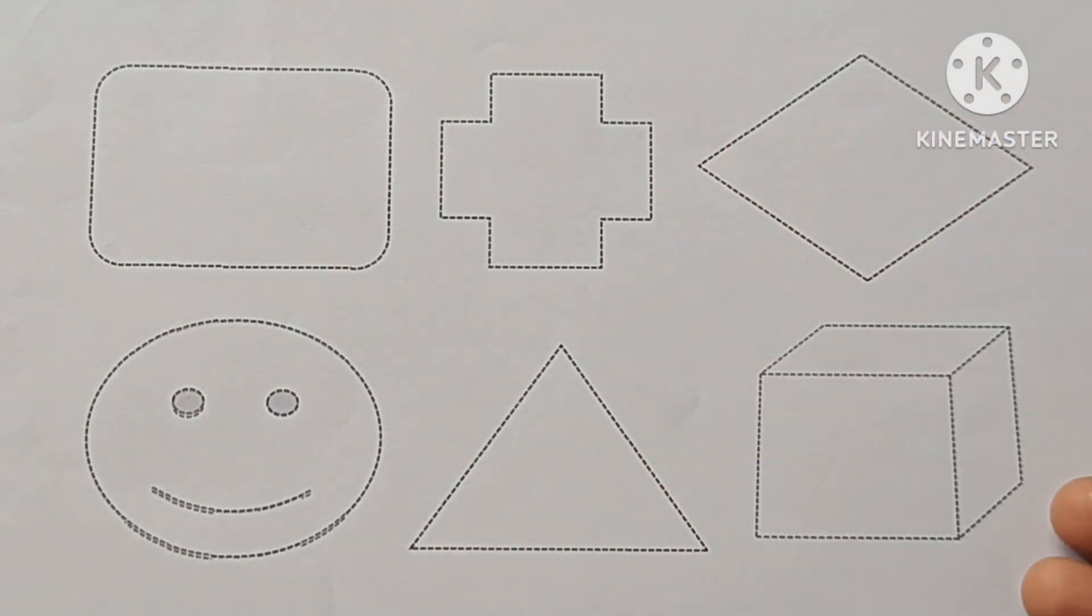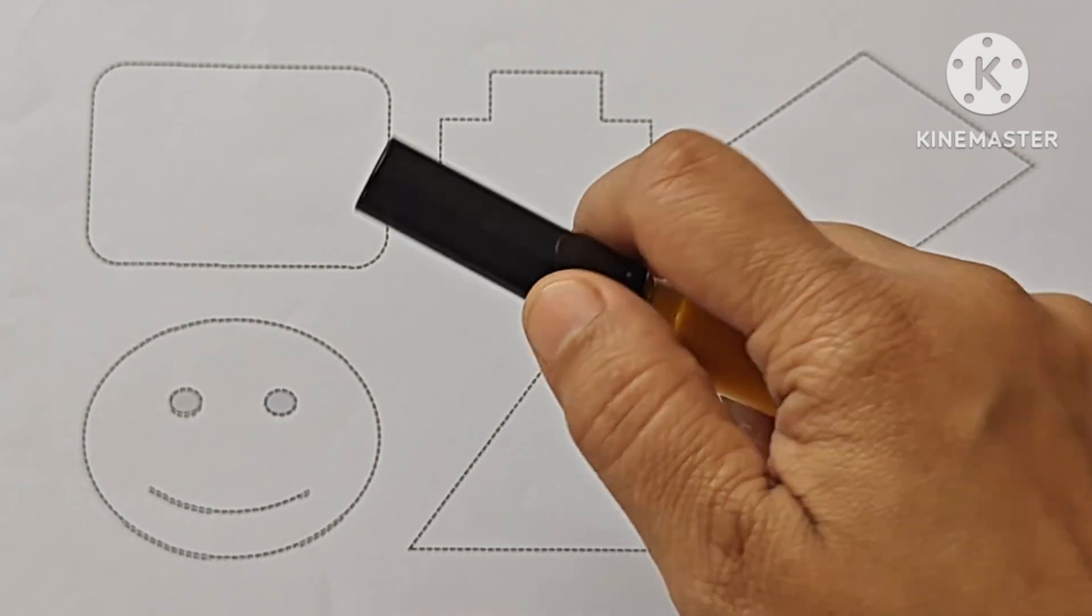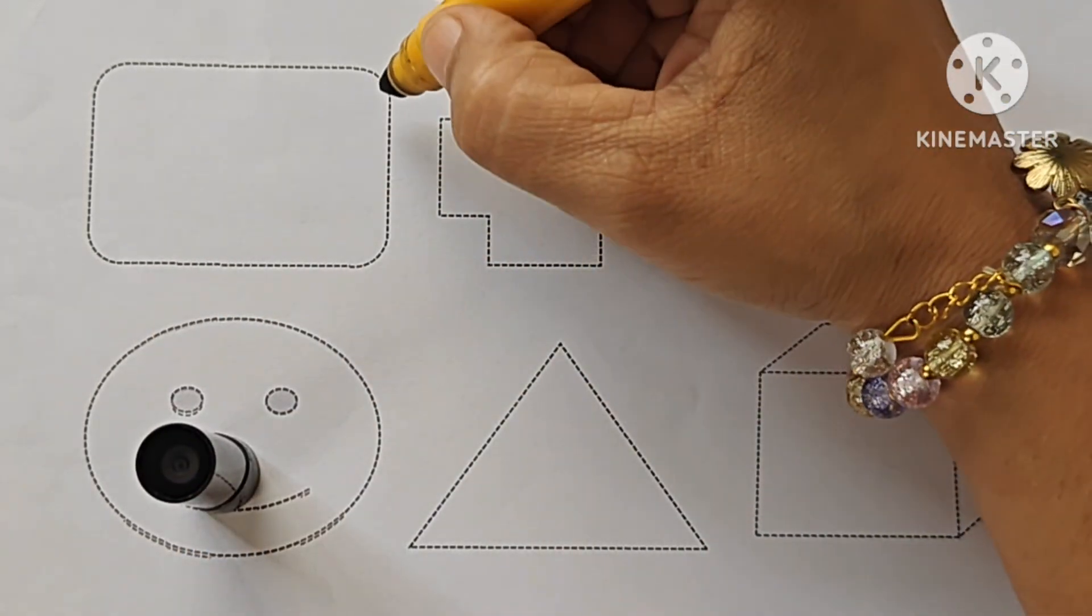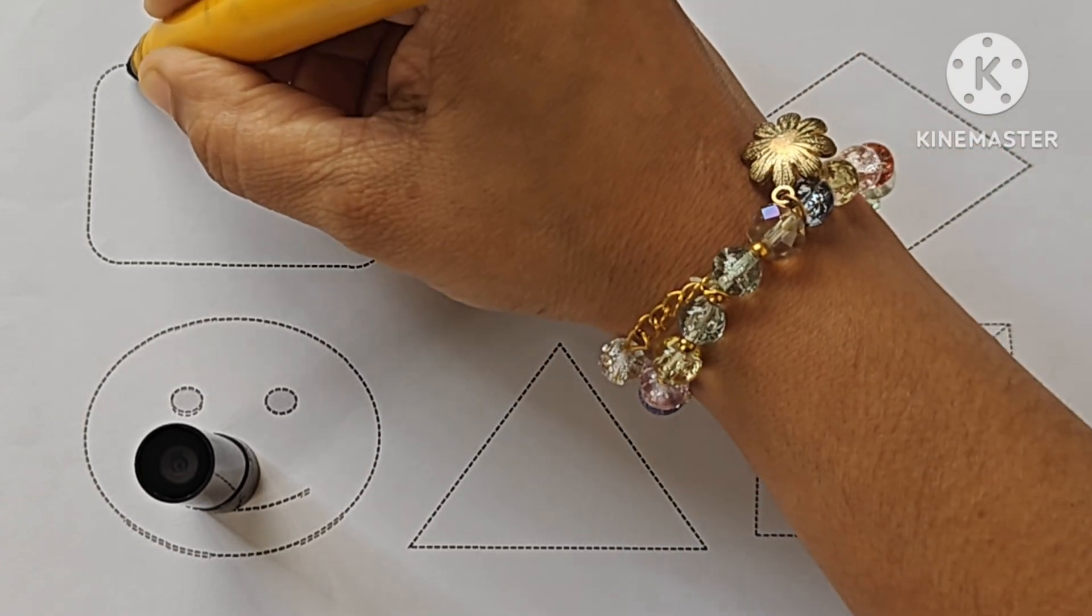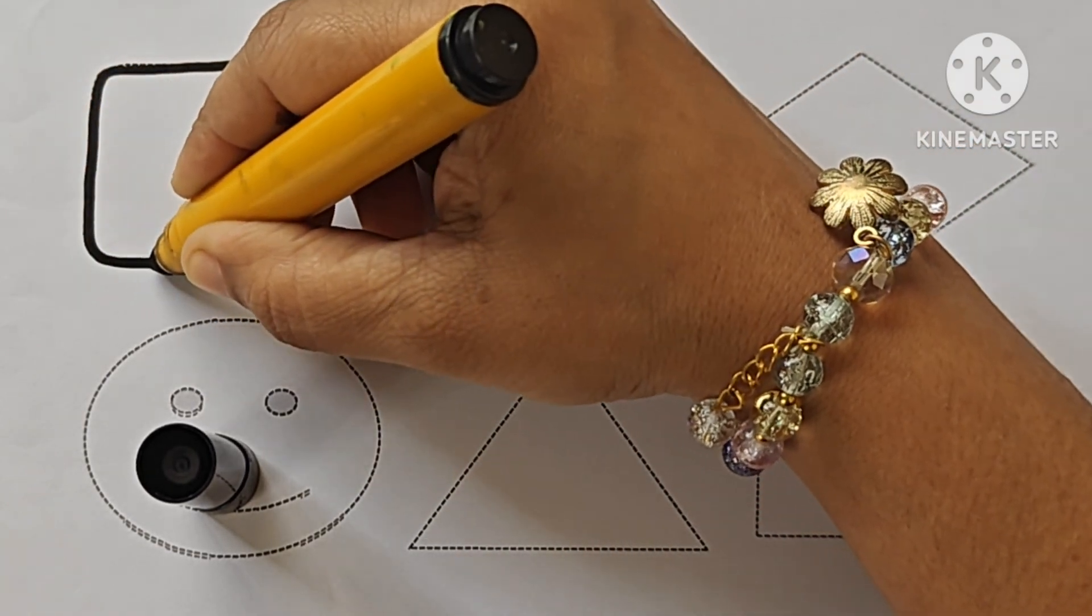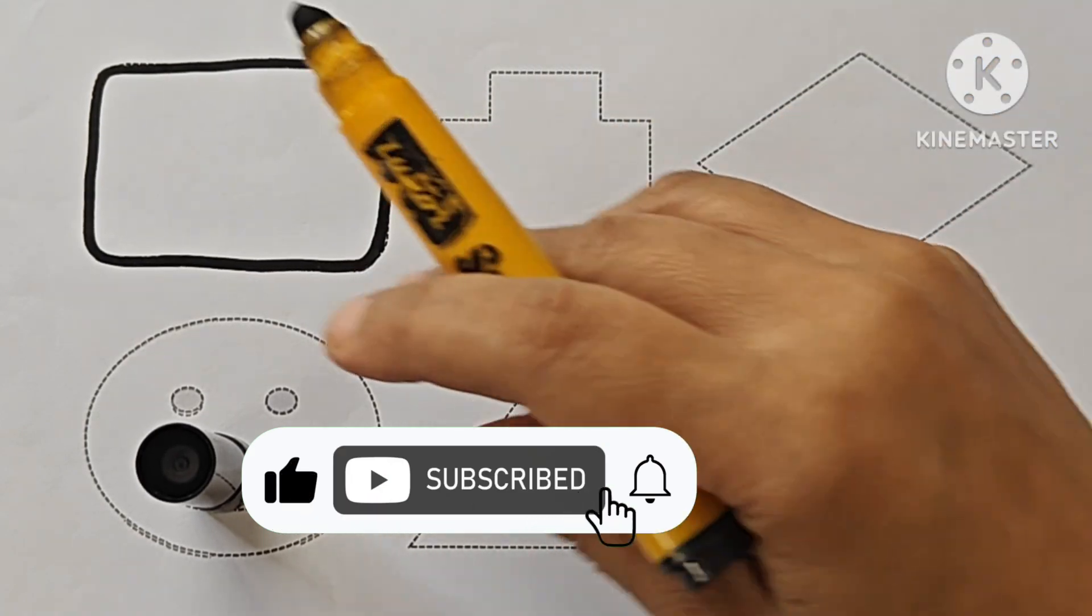Hello kids, in this video we will learn 2D shapes and color names. Let's draw the shapes. This is black color rounded rectangle.